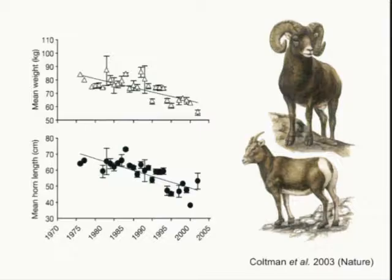One clear example is the bighorn sheep from Alberta. Due to selective trophy hunting of the larger male rams, there has been a steady decline in both mean body weight and mean horn length. Because hunters are selecting for larger animals, there is a significant decline. Quantitative genetics analysis also shows a corresponding decline in the breeding values for these two traits.